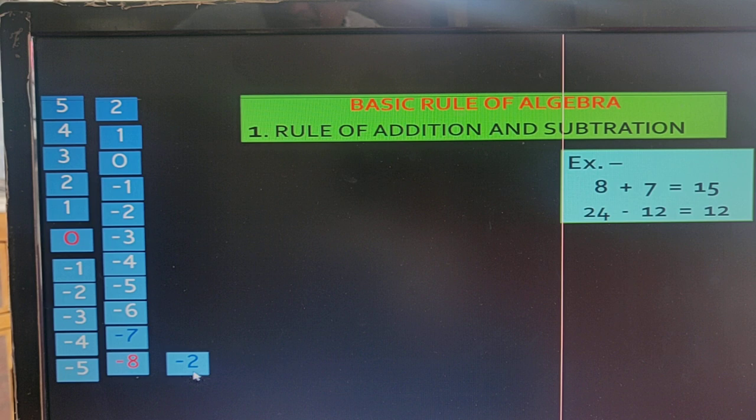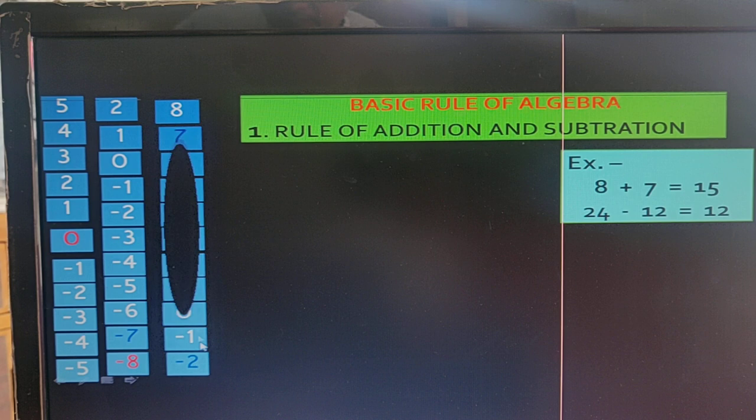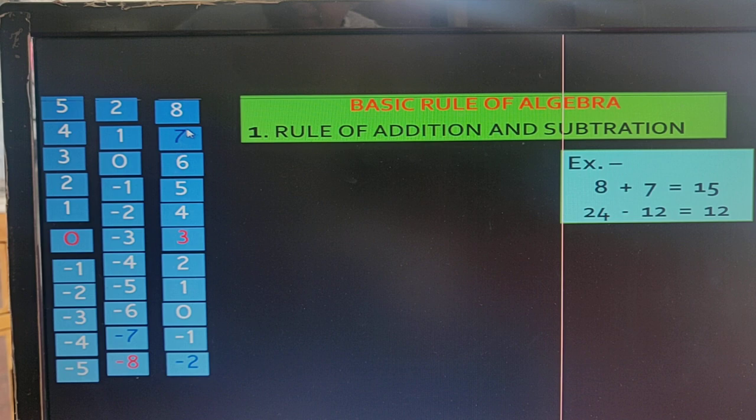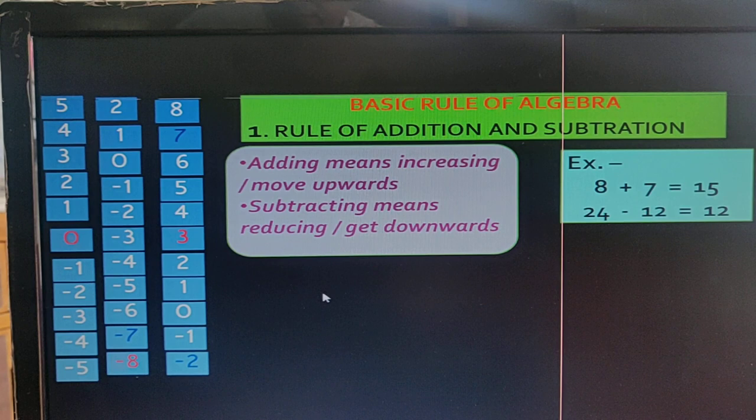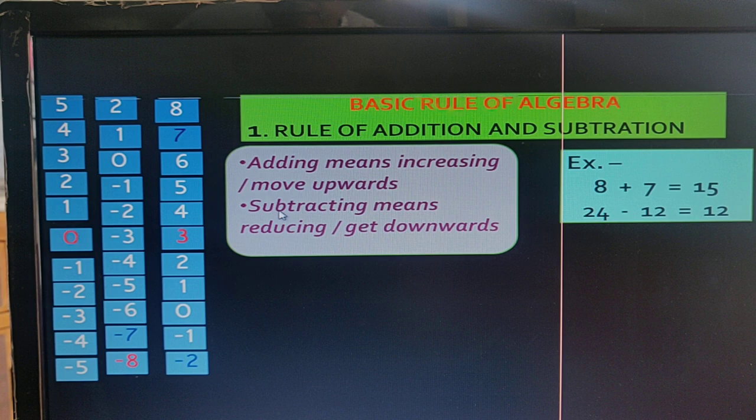If minus 2 is at the bottom in the number line, then we write the upper terms: minus 1, 0, 1, 2, etc.